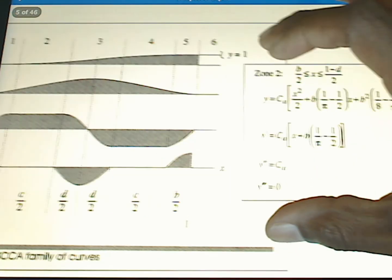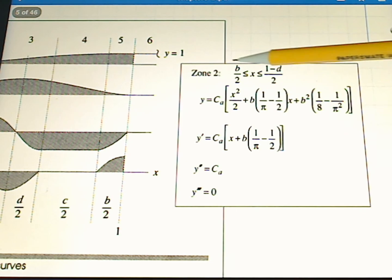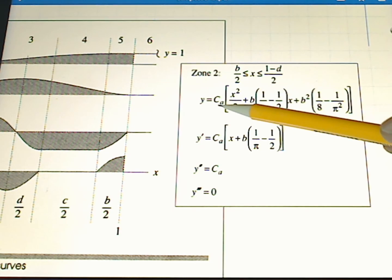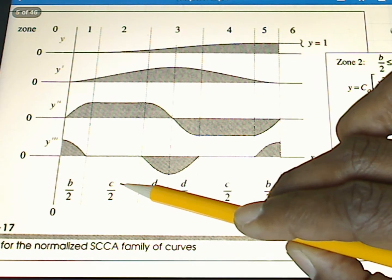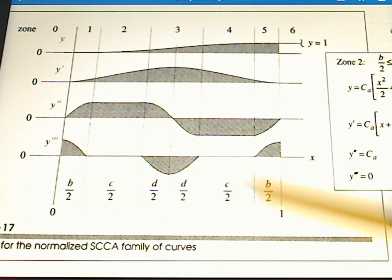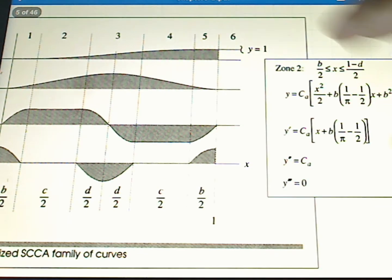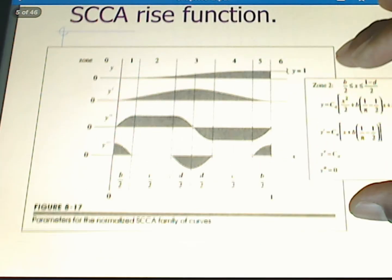The good thing about the SCCA family is that simply by changing these variables CA - you see a B here, and there's a variable C - simply by changing these variables, we can go from, for example, from the modified trapezoid to the modified sine, simply by changing these variables. Where do we get these variables from? They are also in your text.